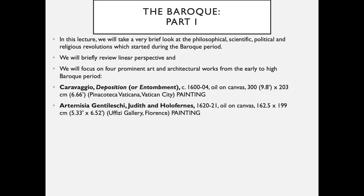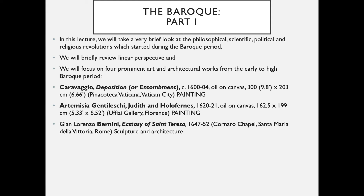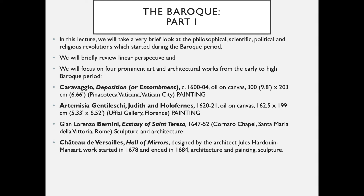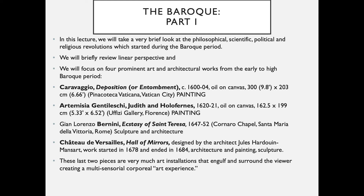We will next look at Artemisia Gentileschi, another painting entitled Judith and Holofernes, from about 1620 — again, a very large painting, about 5 by 7 feet. Then we will look at Bernini's Ecstasy of St. Teresa from about 1650, which combines sculpture, architecture, and painting, installed in the Cornaro Chapel in Rome. We will finish with the Chateau de Versailles — the Hall of Mirrors — installed around 1680, also a work of architecture with painting and sculpture. These last two pieces are art installations that engulf and surround the viewer, creating a multi-sensorial, corporeal art experience — one of the hallmarks of the Baroque period.